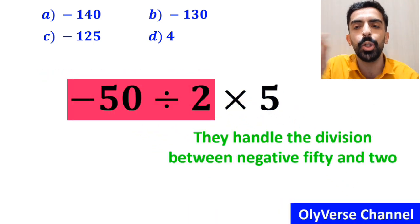In the final step, they handle the division between negative 50 and 2 and write this expression as negative 25 times 5, which eventually gives them the answer negative 125. Then, without any hesitation, they quickly say that option C is the correct answer to this question.